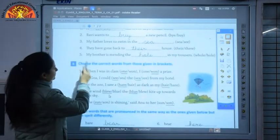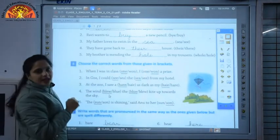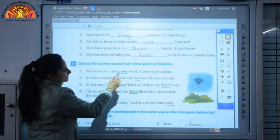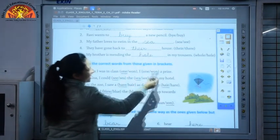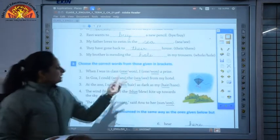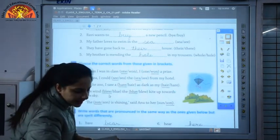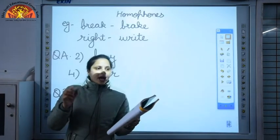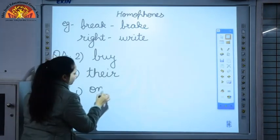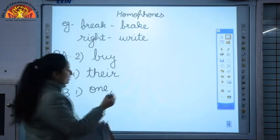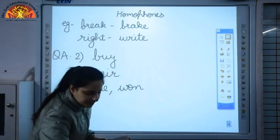Now we'll discuss question number B. Choose the correct words from those given in brackets. First one, when I was in class, one or won, I won a prize. The sound of both these words is same but the spelling and meaning is different. So when I was in class, class one, I won a prize.